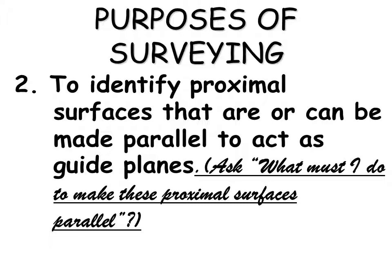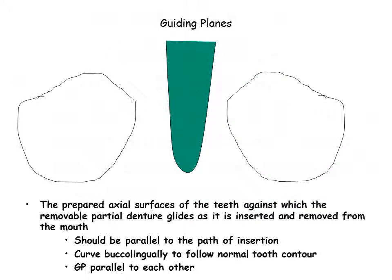Areas of tooth structure which can be made parallel for use as guide planes should be identified. Guiding planes give the partial denture a definite path, ensure predictable retention and component seating, and provide frictional resistance to dislodgement of the partial denture. This allows one to ask: what must I do to make these abutments parallel? Guiding planes are prepared axial surfaces of the teeth against which the removable partial denture glides as it is inserted and removed from the mouth. They should be parallel to the path of insertion, curve buccolingually to follow normal tooth contour, are parallel to each other, and are one-third to two-thirds the clinical crown height.